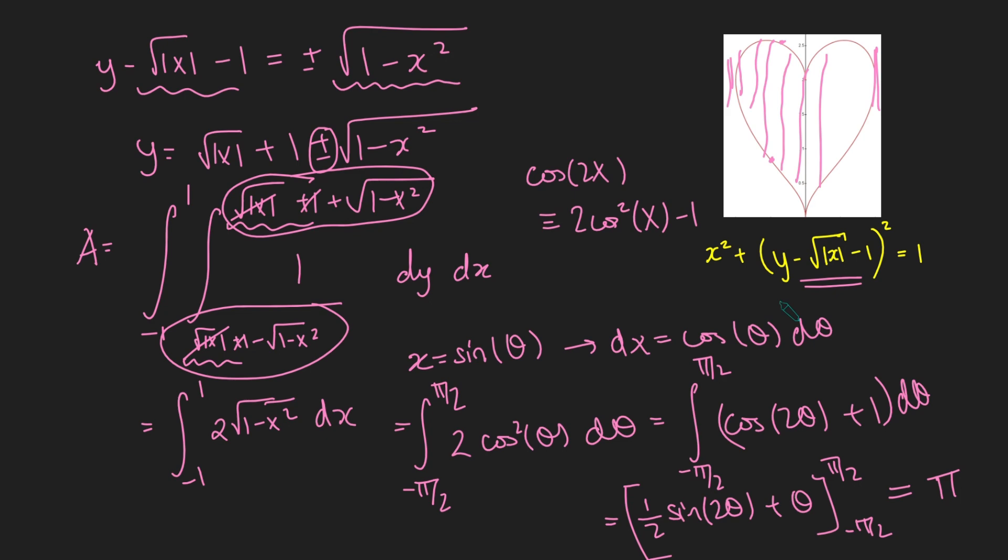And this begs the question, well, what other shapes do we get when we change this thing to something else? Because using the exact same argument, the area of those shapes would be pi. And so just plotting a few of these on Desmos, we get some really interesting graphs, which also have area pi.